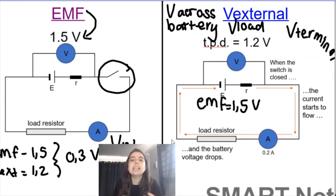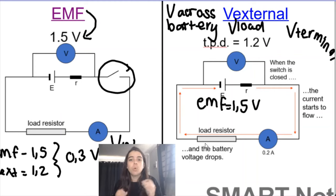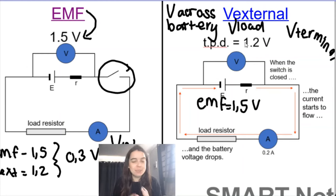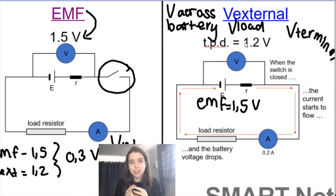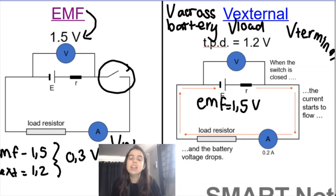The energy is converted into heat within the battery to get the charges moving. So we have three values: 1.5 volts is the EMF when the switch is open and no current flows; 1.2 volts is V external, V load, or V terminal — the voltage available to the rest of the circuit, used by resistors, light bulbs, and appliances in the external circuit; and 0.3 volts is V internal or lost volts — the difference between EMF and V external.